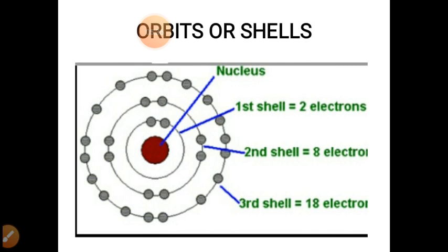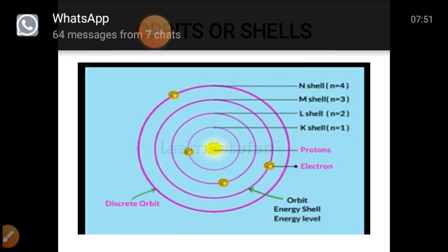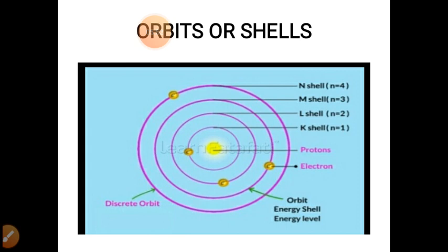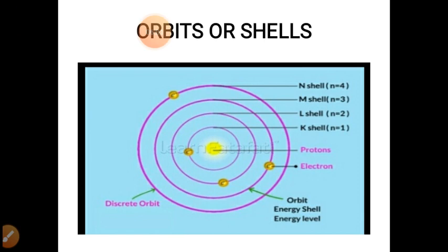This slide again shows the orbits or the shells, orbit energy shell or energy level. N shell n equals 4, M shell 3, L shell 2 and K shell is 1. So the shell just after the nucleus is K, L, M, N.